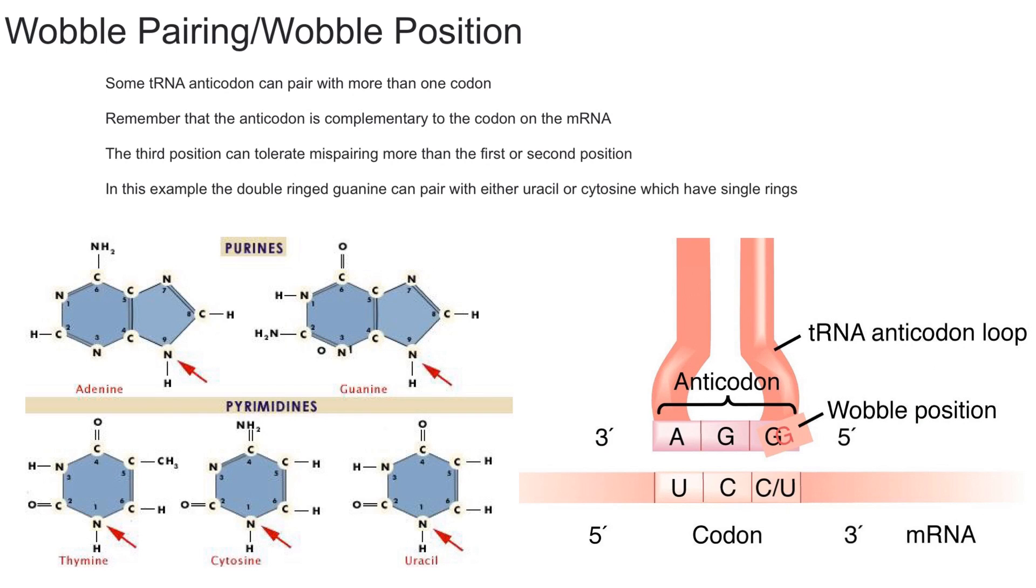If you google a codon chart, you'll see that the codons that encode for the same amino acid generally will differ at the third base. And so that pretty much sums it up for this video.